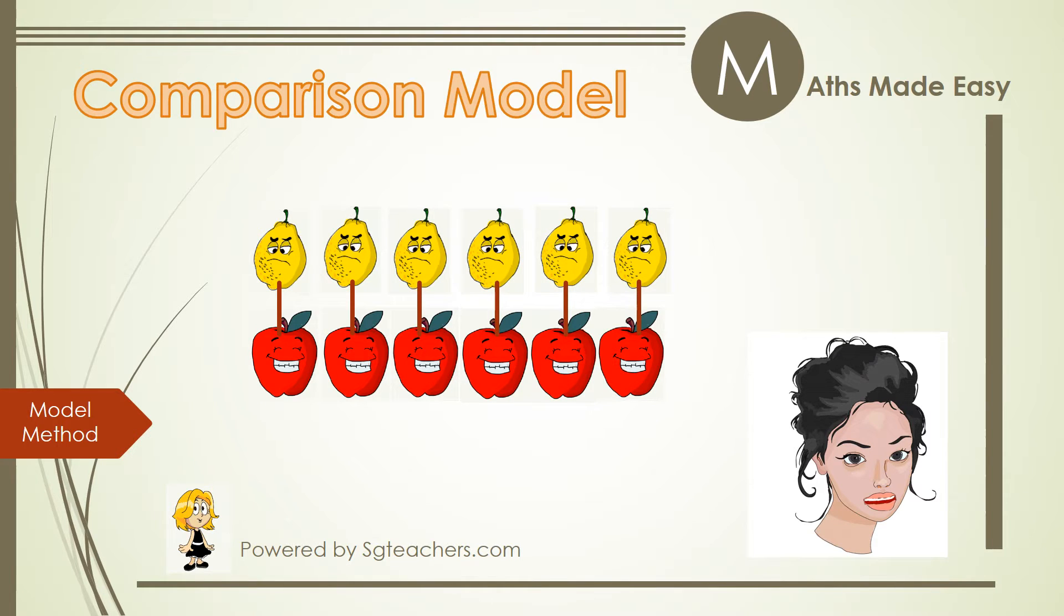We can match the lemons and the apples one to one to compare their numbers. Since there are 6 lemons, and it is 2 more than apples, 2 of the apples need to be removed or crossed out. The difference between the 2 numbers is 2.